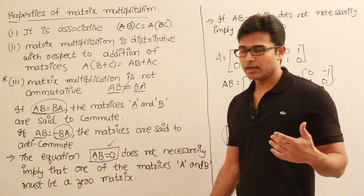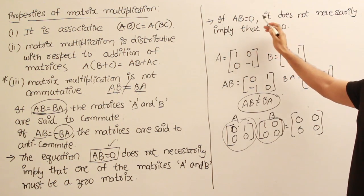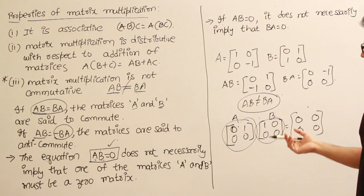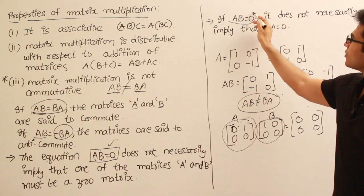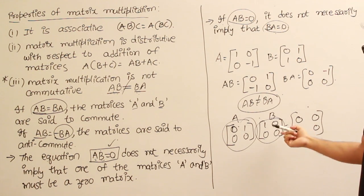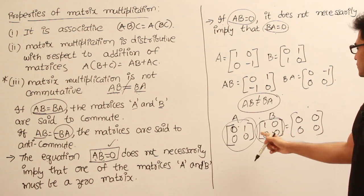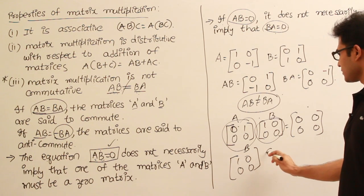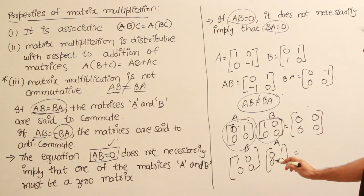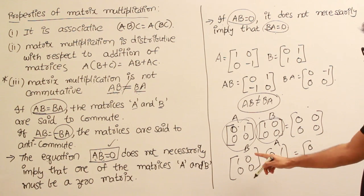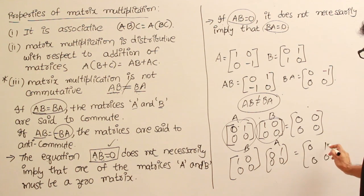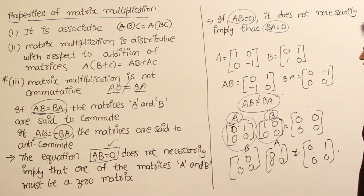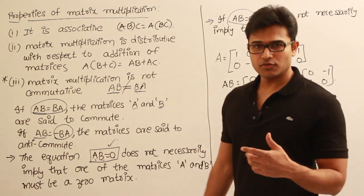Furthermore, if A into B equals zero, it doesn't necessarily mean that B into A equals zero. Using an example with A = [0 1; 0 0] and B = [1 0; 0 0], we get AB = zero matrix, but when we compute BA = [0 1; 0 0], which is clearly not zero. So even if AB equals zero, BA need not be zero. These are the properties of matrix multiplication; we have a few more properties we shall see later.